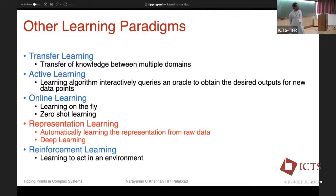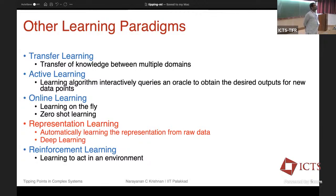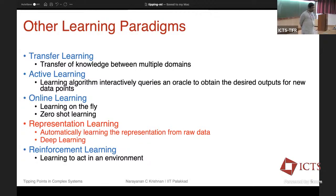If you think about self-driving cars and autonomous vehicles — suppose the car meets with an accident, who is responsible for it? Is it the algorithm, the company, the scientist who designed the algorithm, or somebody else who trained the model? Similarly, in Europe they have GDPR rights — if you're using an AI system for assisting in any particular task, one of the mandates is that the company who built such a system should also explain how the model arrived at a particular decision.